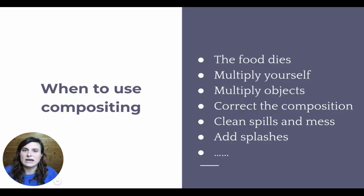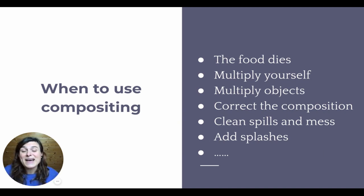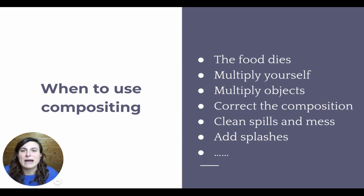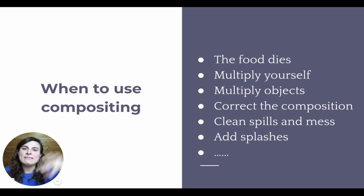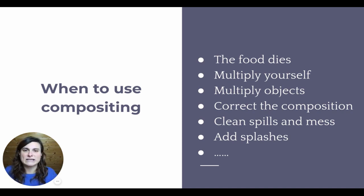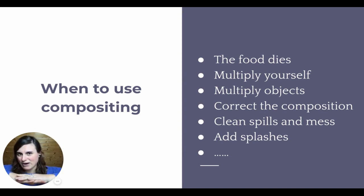So correct the composition, get rid of objects, clean spills and mess. For example, if you're shooting splashes, maybe you get a beautiful splash that will go into the final image only on maybe the fifth or tenth attempt. In the meantime, your background is covered in splashes and water. So what you want to do is shoot one good image for the background at the very beginning, then start splashing — so you take that first image with a beautiful pristine background and composite the good splash image on top of the clean background to create the perfect image.